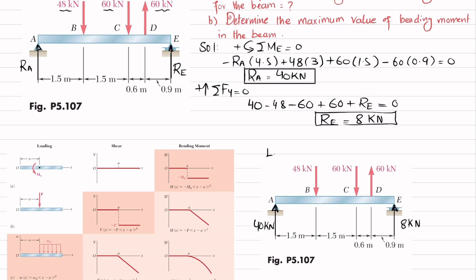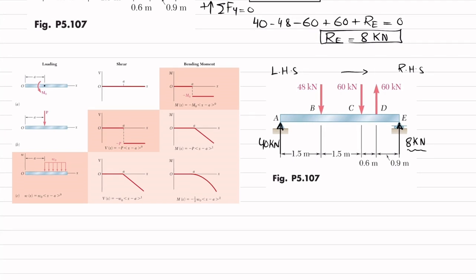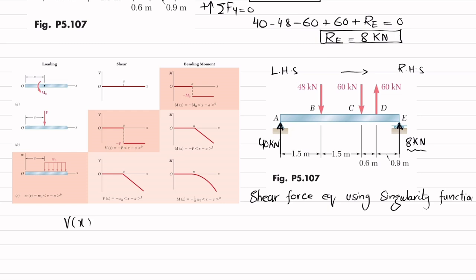We will find the shear force and bending moment equations using singularity functions, starting from the left-hand side and moving toward the right-hand side. At the right-hand end, we neglect the 8 kilonewton force because it causes the expression to go to zero. Since all loads are point loads, we use the singularity function form: for a downward load, shear force contribution is minus P times bracket x minus a bracket to the power 0.